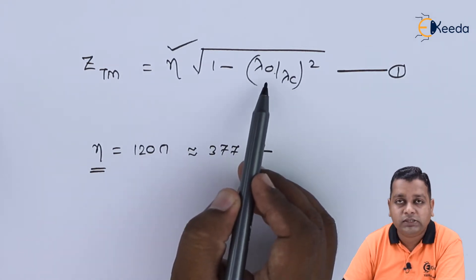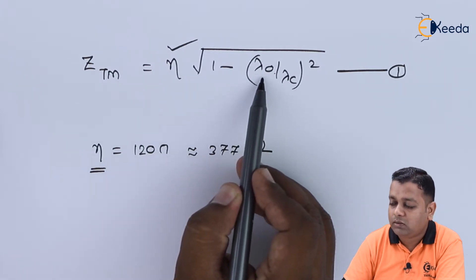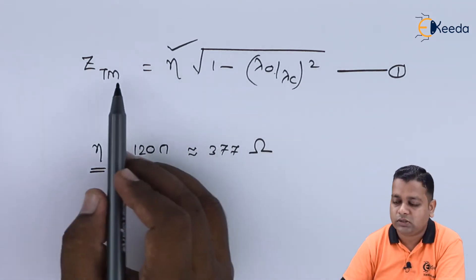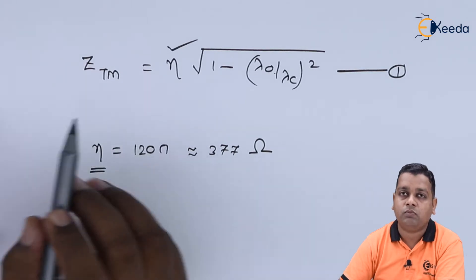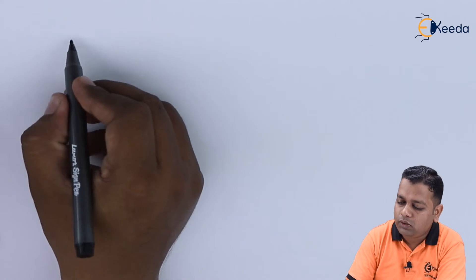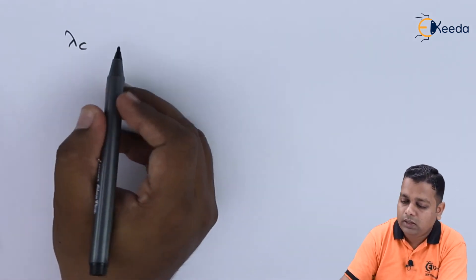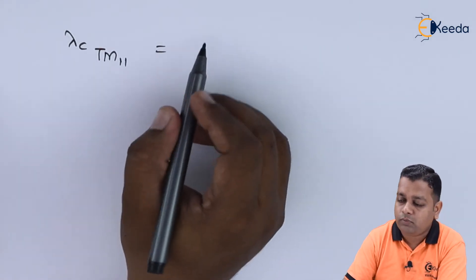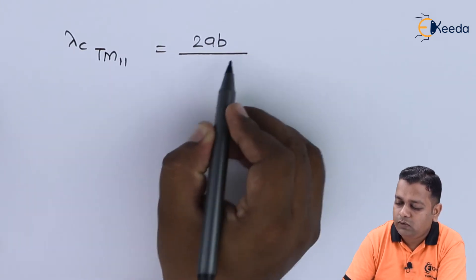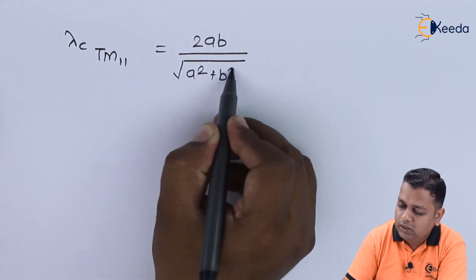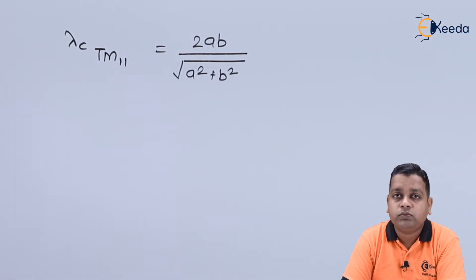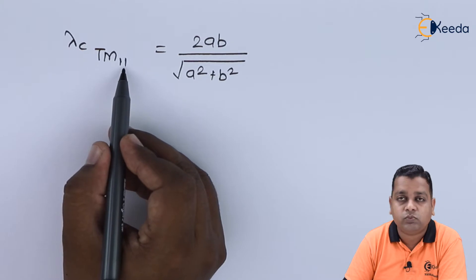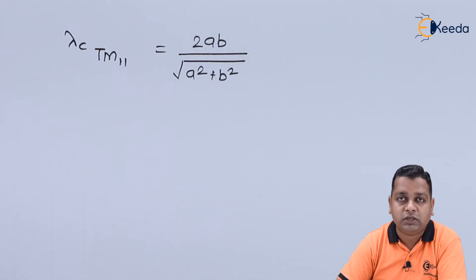From the given frequency of 10 gigahertz, we can determine λ₀. First, let us compute the cutoff wavelength λ_c. For TM11 mode, λ_c = 2ab / √(a² + b²). Substituting m = 1 and n = 1 gives us this simplified representation of the formula.